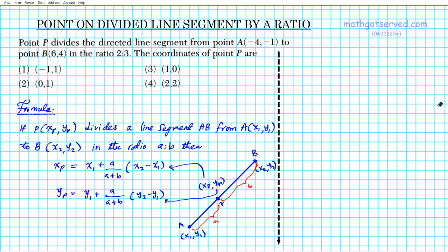So let's go ahead and apply this formula to this particular problem. So the point X1, Y1, which is basically point A, X1, Y1 is point A, which is -4, -1. And then X2, Y2 is point B, which is 6, 4.